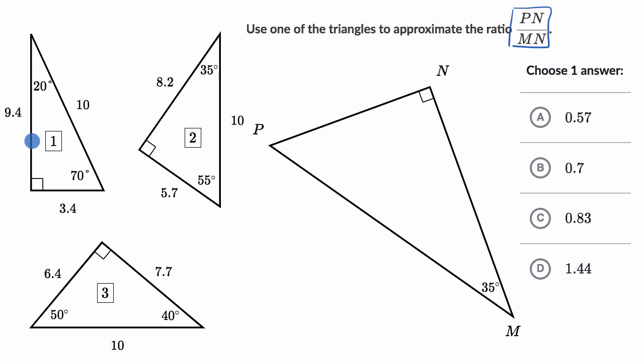Of all of these choices, this doesn't have a 35 degree angle, it has a 90. This doesn't have a 35, it has a 90. But triangle two here has a 35 degree angle, has a 90 degree angle, and has a 55 degree angle.